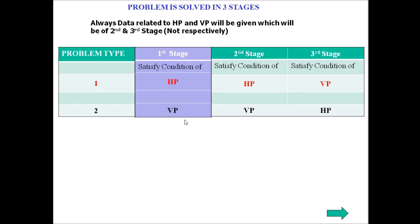If I satisfy the condition with respect to VP in the first stage, by default in the second stage I will have to take care of VP data, and then the HP data. This data is always given in the problem, and after reading the problem, we have to decide what should be the first stage. If I make a mistake and satisfy the condition with respect to VP when it should be HP first, then my problem goes wrong. So deciding the first stage is a very basic and important criterion while solving the third-stage problem of projection of solids.